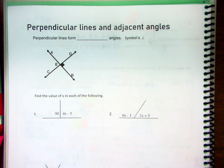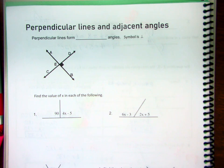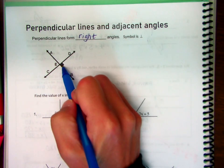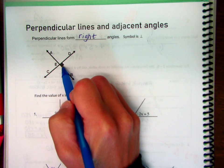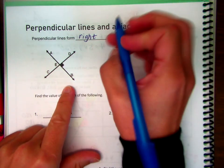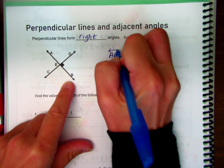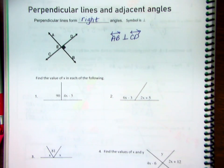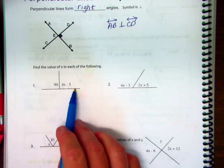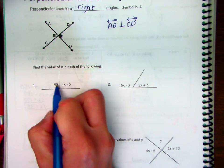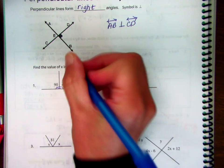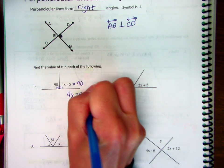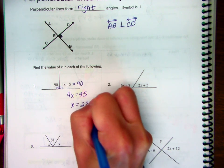Now we're going to talk about perpendicular lines. If two lines are perpendicular, they intersect and form right angles. A right angle measures 90 degrees, and that small box indicates the right angle. The symbol for perpendicular: line AB is perpendicular to line CD. For each question, find the value of X. When two line segments are perpendicular, this is a 90-degree angle. Since the two angles add up to 180, this angle must also be 90. Solving: add 5 to get 4X equals 95, divide by 4, and X equals 23.75.